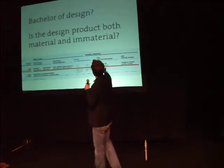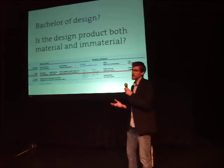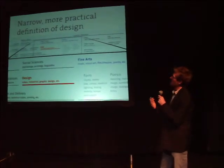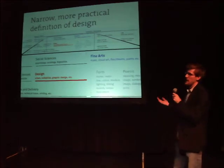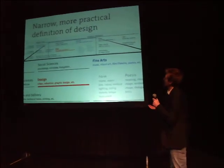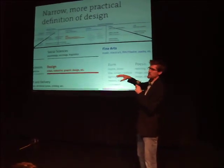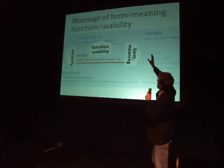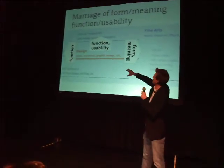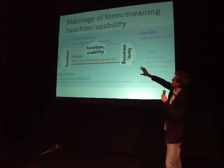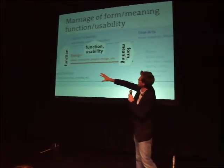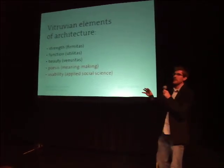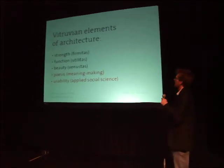The other question is: is design both material and immaterial? Does the design product have to be material or image, or can it be both? My core argument is that this broad definition of design is impractical — it's too broad and not useful. I would suggest we need a narrower, more traditional definition, perhaps going back a hundred years: the idea of the marriage of form and function. I would add a couple more: usability, borrowed from the social sciences as a newer element, and then looking left toward engineering for function, and toward the applied arts for form and meaning. Design is a combination of all these elements, but within the physical — the product is a physical thing, not an immaterial one.